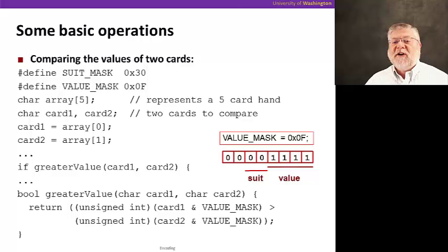Let's take a look now at comparing the values of two cards. Again, we have our array of five cards, our hand, and we compare two cards, card one and card two. Which has the greater value? Is card one a greater value than card two? So you'll notice here what we're going to do is apply a different mask to the card.